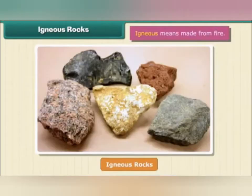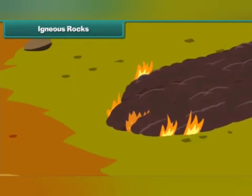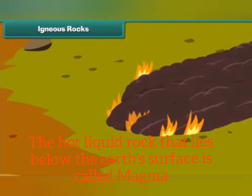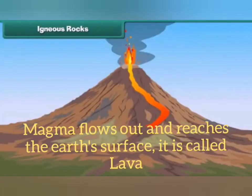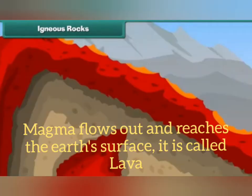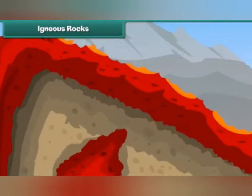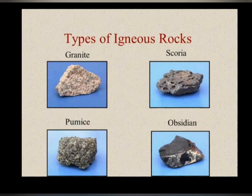Now let us learn about igneous rocks. The word igneous means made from fire or heat. Igneous rocks are also known as fiery rocks. These rocks are formed when magma cools and solidifies. The hot liquid that lies below the earth's surface is called magma. Magma keeps getting pushed upwards by the pressure of other rocks inside. When this magma flows out and reaches the earth's surface, it is called lava. It gradually cools down and gets harder to form igneous rocks. Sometimes magma turns solid underground too. There are many types of igneous rocks, each containing different minerals and of different colors and sizes.